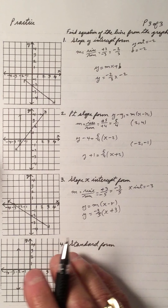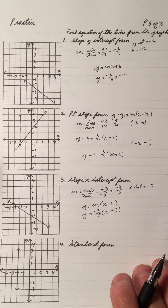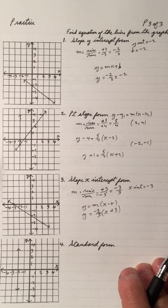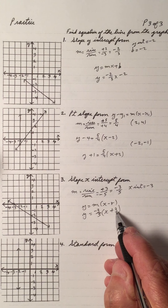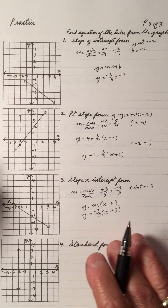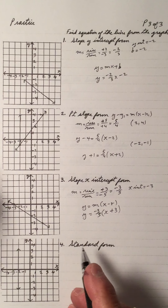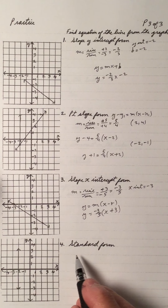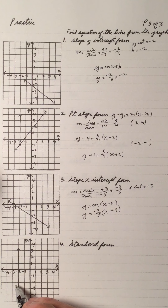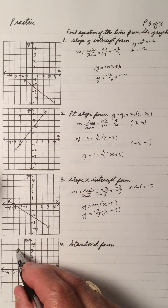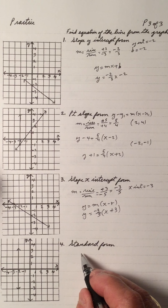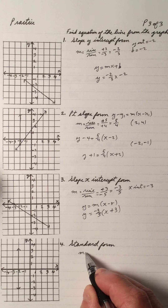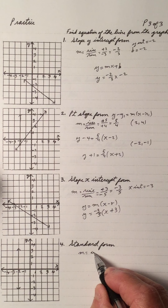And that's the equation of the line in slope x-intercept form. If I multiply negative 3 fifths by both terms, I can get the slope y-intercept form. And let's look at the standard form for this line — this line is a vertical line.